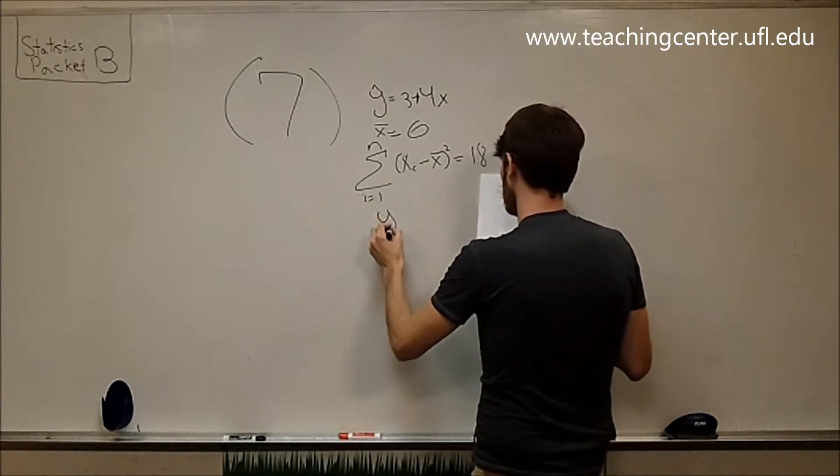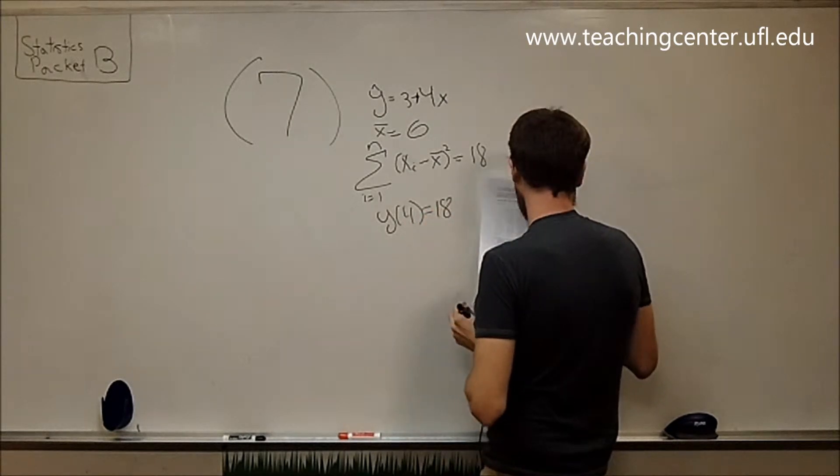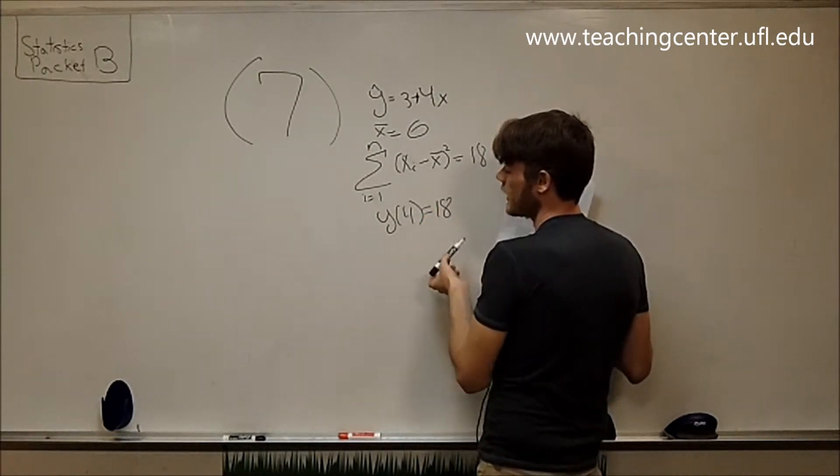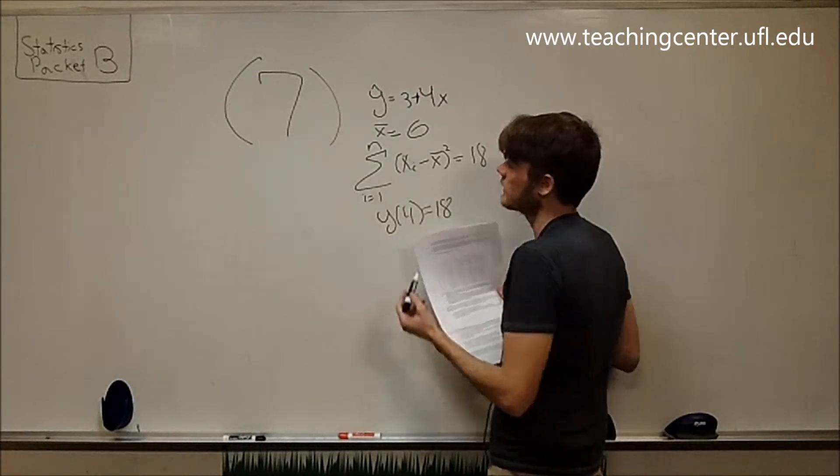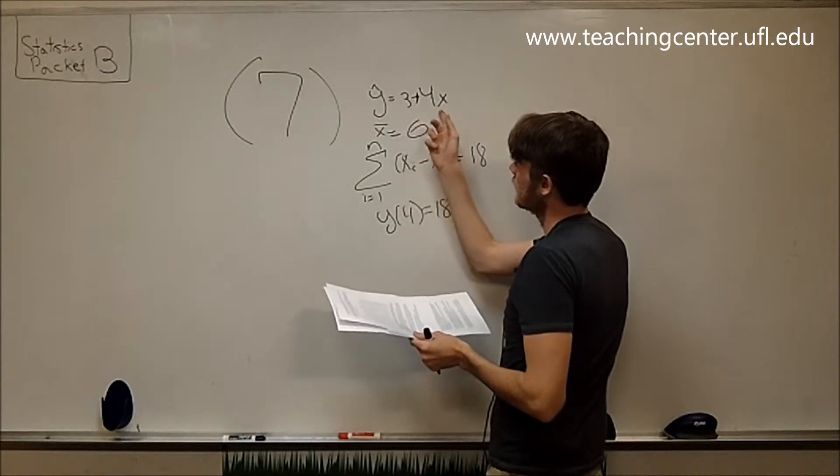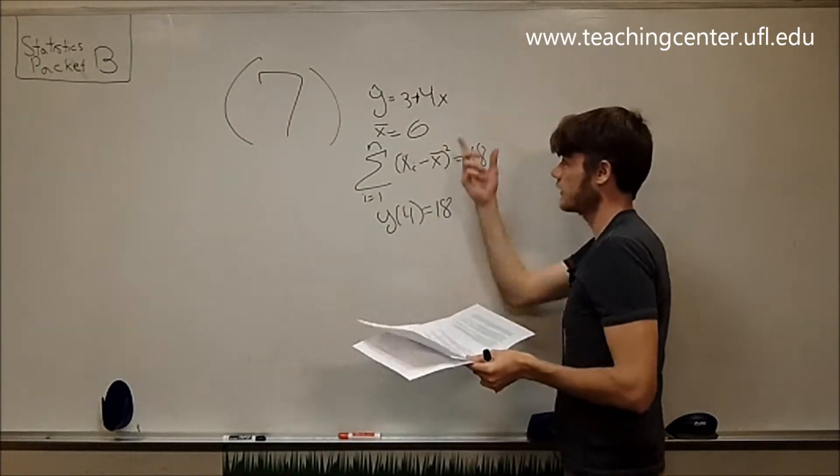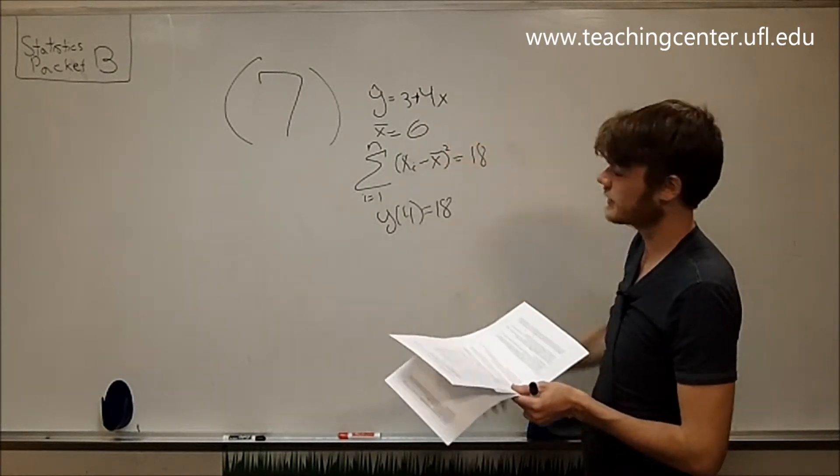We have y hat equals 18. This is what we got when we collected the data. We got at x equals 4, we got 18. This is not what this is because 4, 16, that actually equals 19. This is what we actually got. This is what our equation predicted.